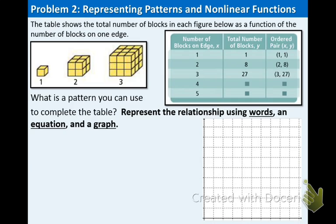Do you see any pattern in the table? Specifically look at the first two columns: 1, 2, 3, 4, 5 and 1, 8, 27. How do you make 1 become 1? How do you make 2 become 8? How do you make 3 become 27? What we're doing is multiplying the number of blocks on each edge times itself three times — another way to write that is 1 to the 3rd. Let's verify: 2 times 2 is 4 times 2 is 8, so 2 to the 3rd equals 8. And 3 times 3 is 9 times 3 is 27, so 3 to the 3rd equals 27.